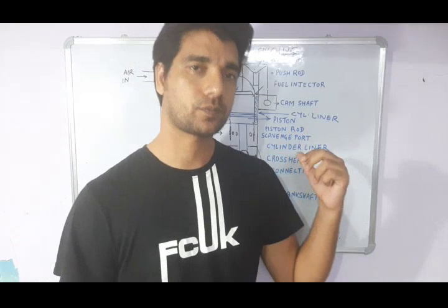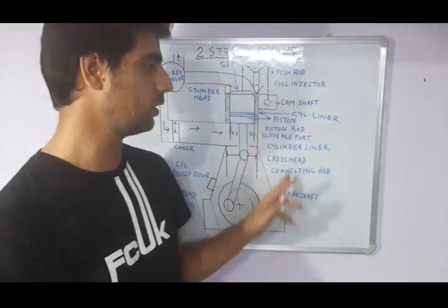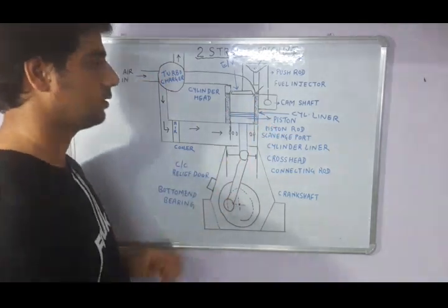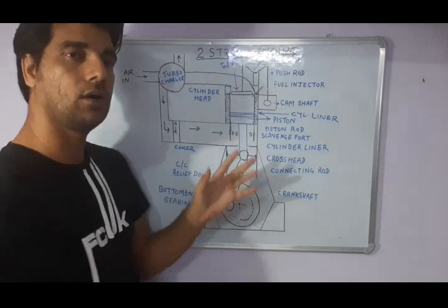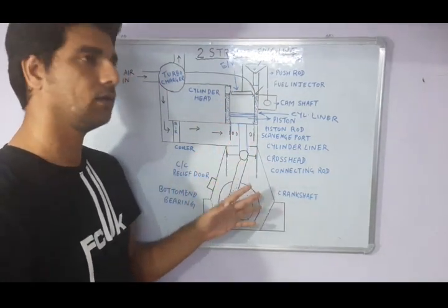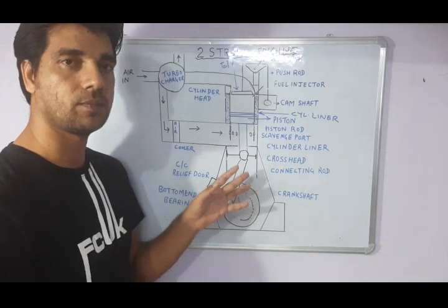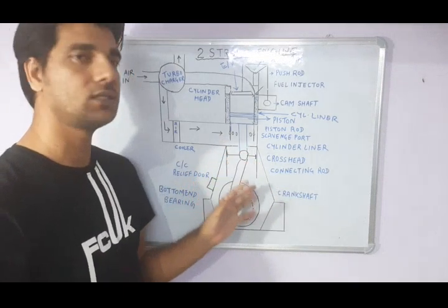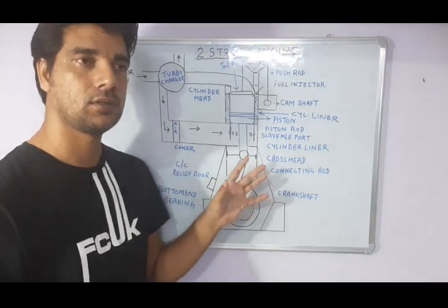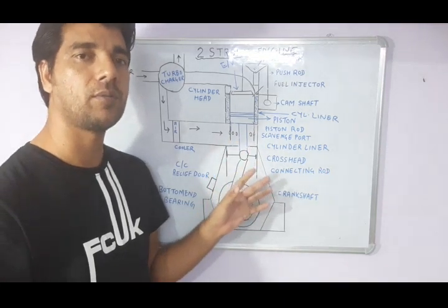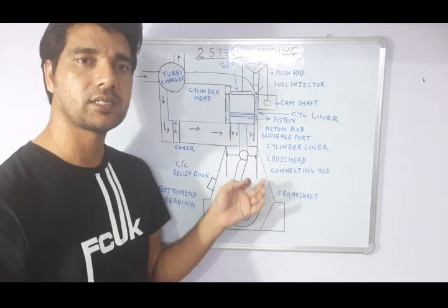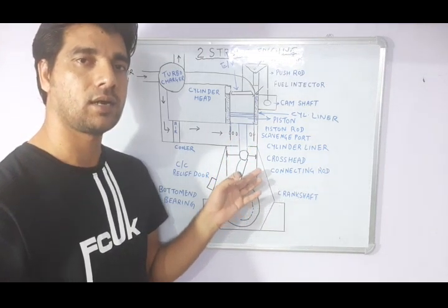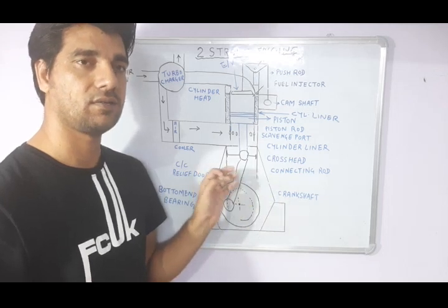The two-stroke diesel engine — these are the components written here on this basic line diagram. A lot of components are there, so first we must know what is the use of the two-stroke engine on board the ship. The two-stroke diesel engine is mostly used for the propulsion purpose. The propeller of the ship is rotated with the help of the two-stroke diesel engine, connected to the tail shaft in connection with the intermediate shaft and crankshaft.